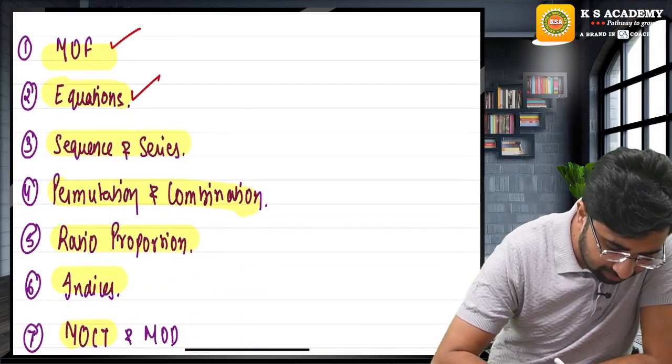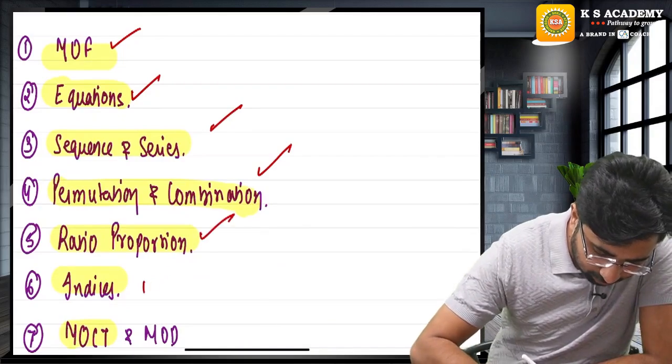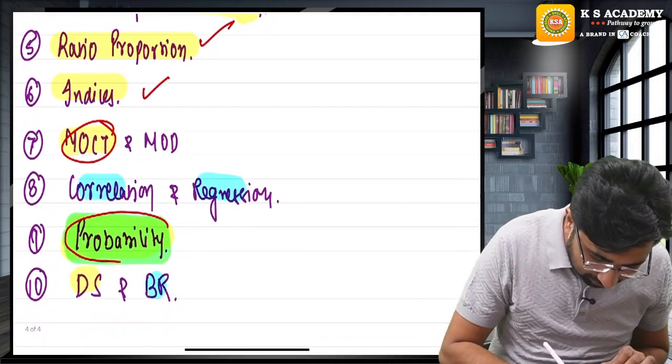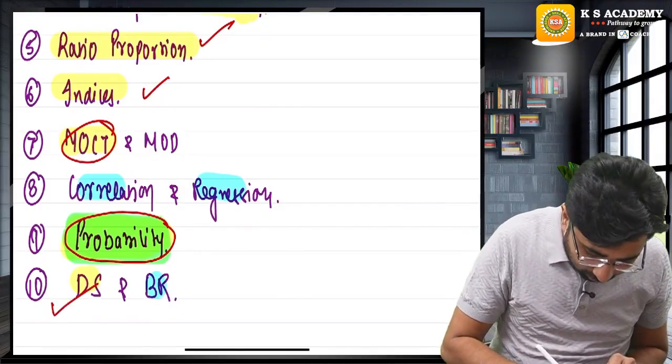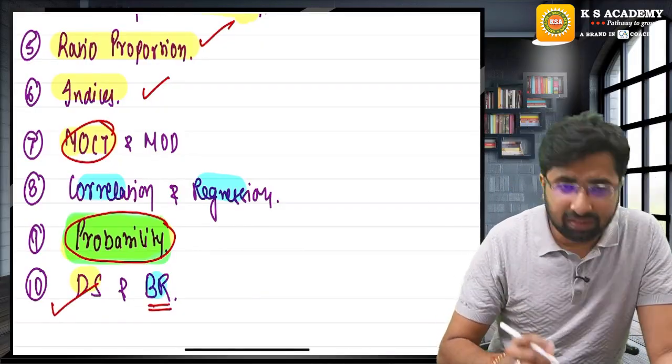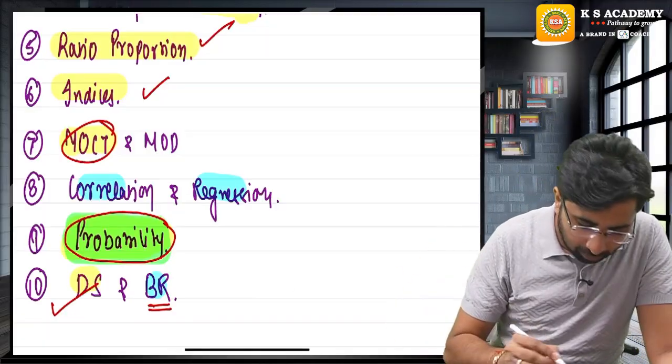Can you tell us something about the revision? I will be providing you the detailed revision of mathematics of finance, equations, sequences, PnC, ratio proportion, indices, and measure of central tendency. I will be uploading one more revision series of probability.